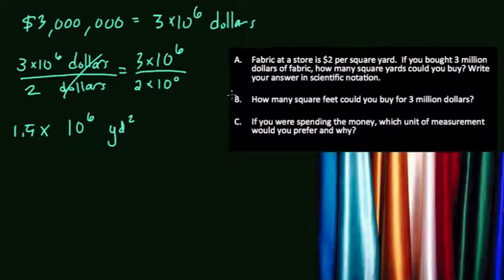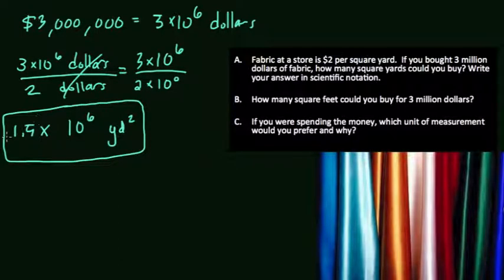In part B, we want to know how many square feet you could buy for $3 million. We already know the square yards, so if we convert to square feet, we'll have the answer. What's happening here is the difference between a yard and a foot, and a square yard and a square foot. One yard equals 3 feet.